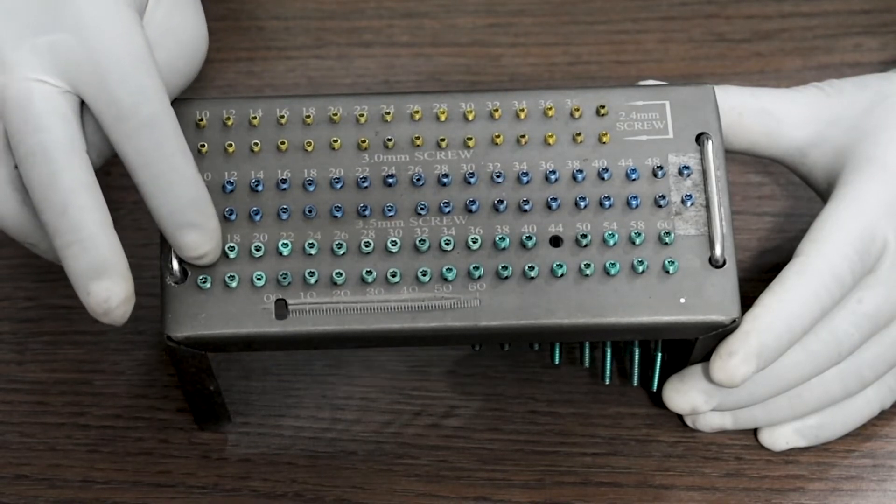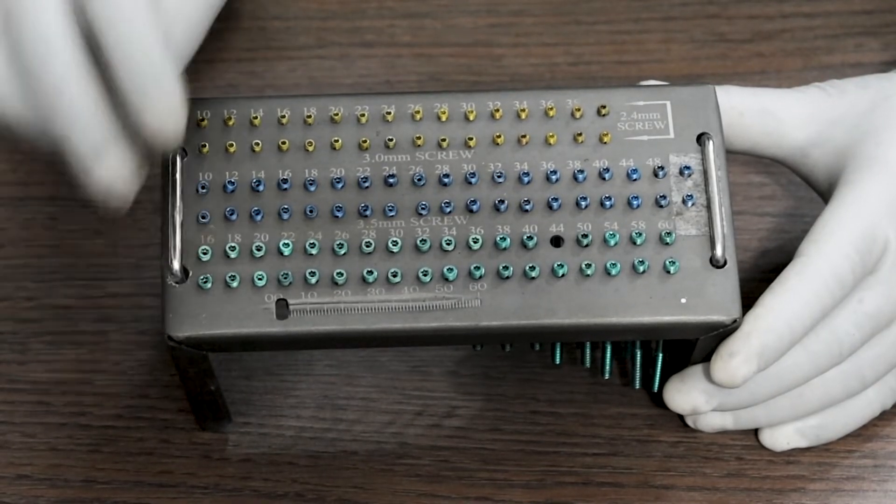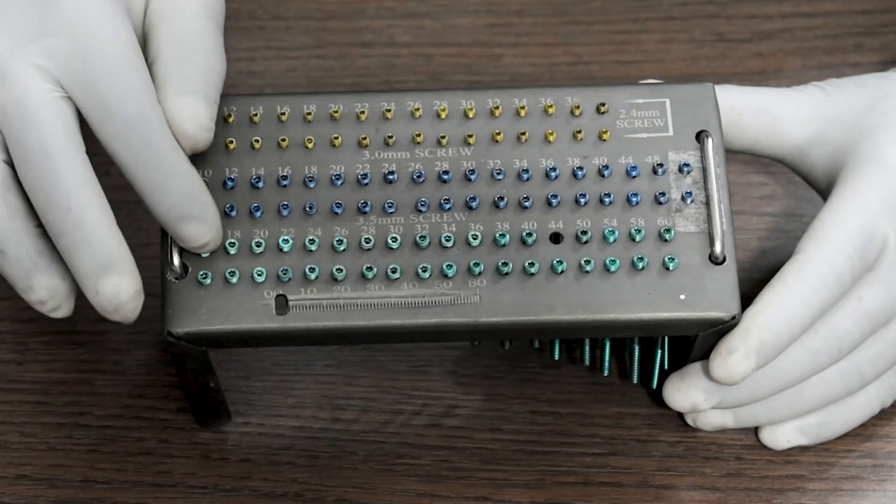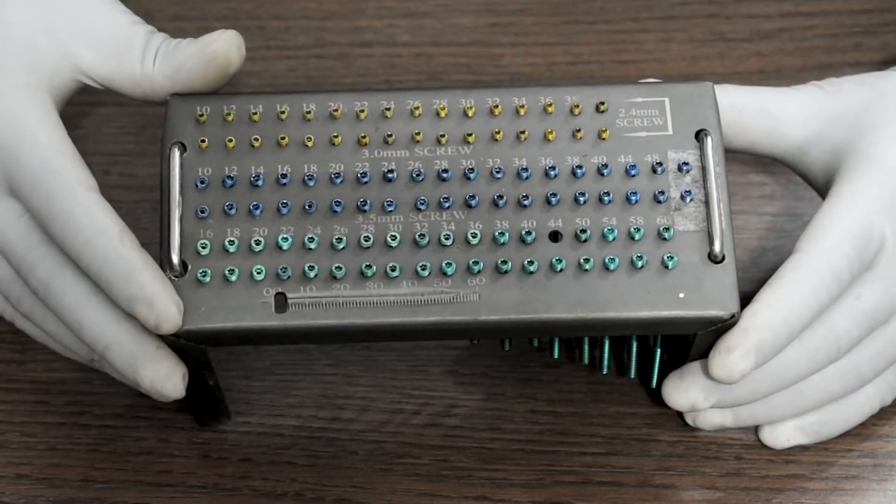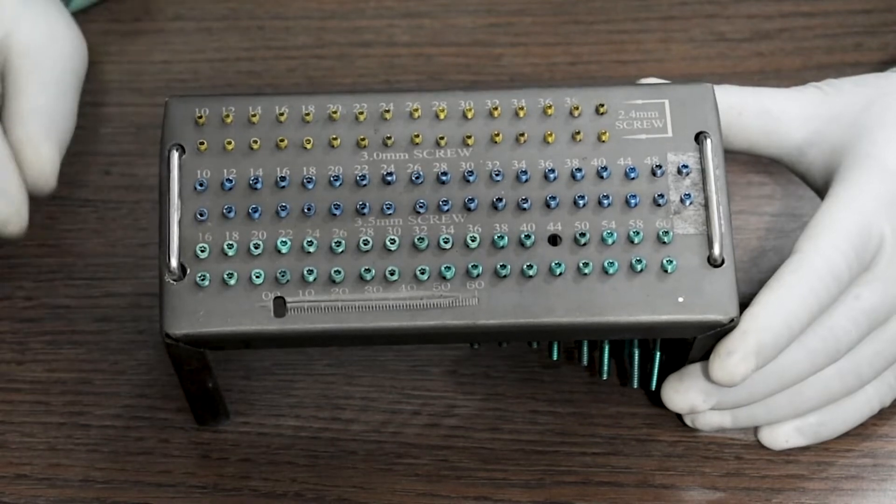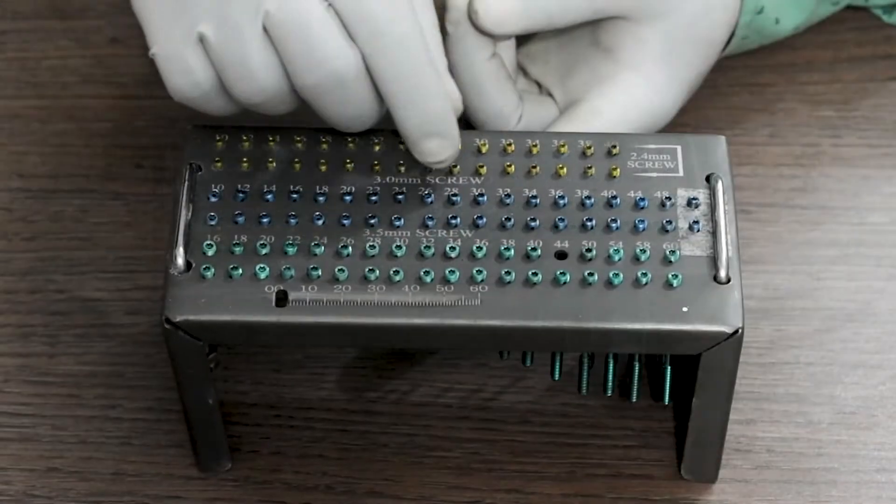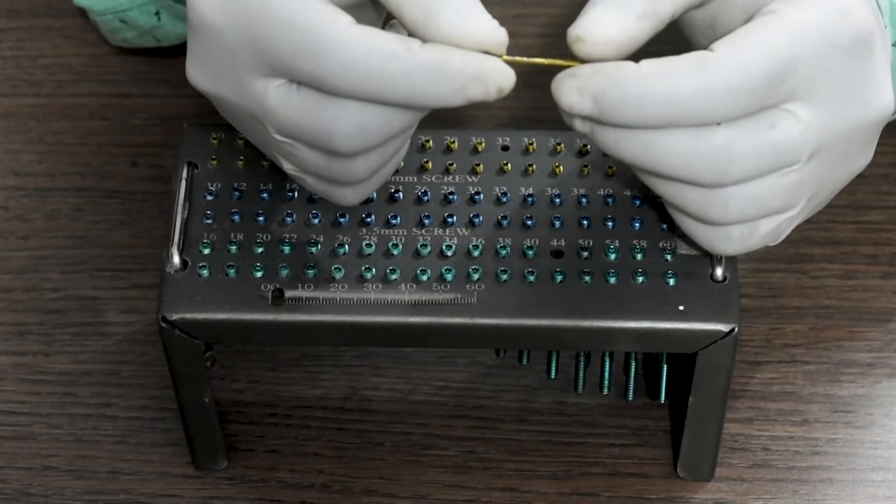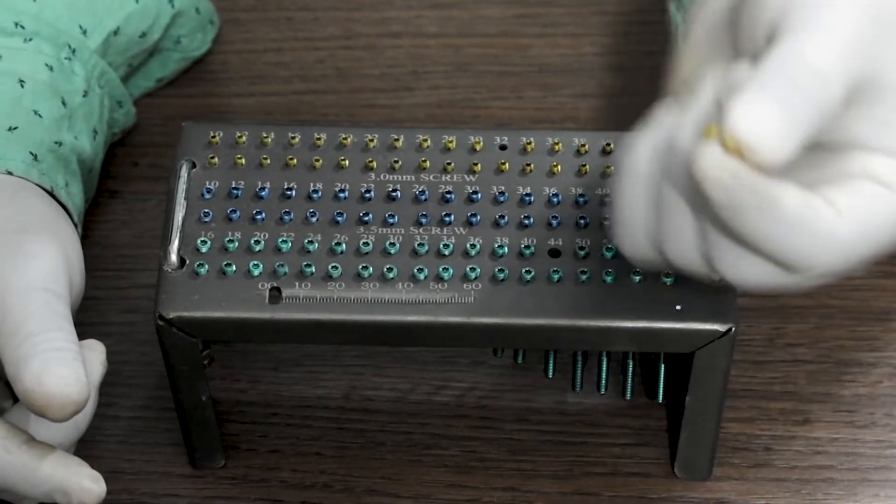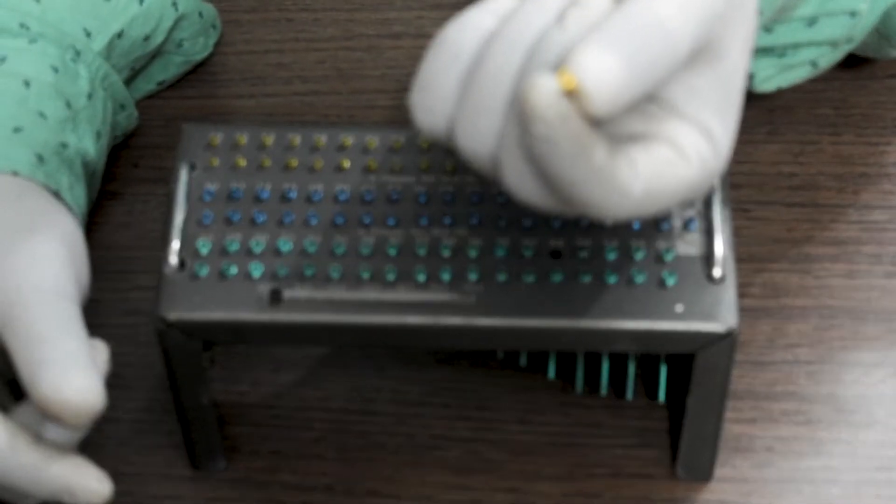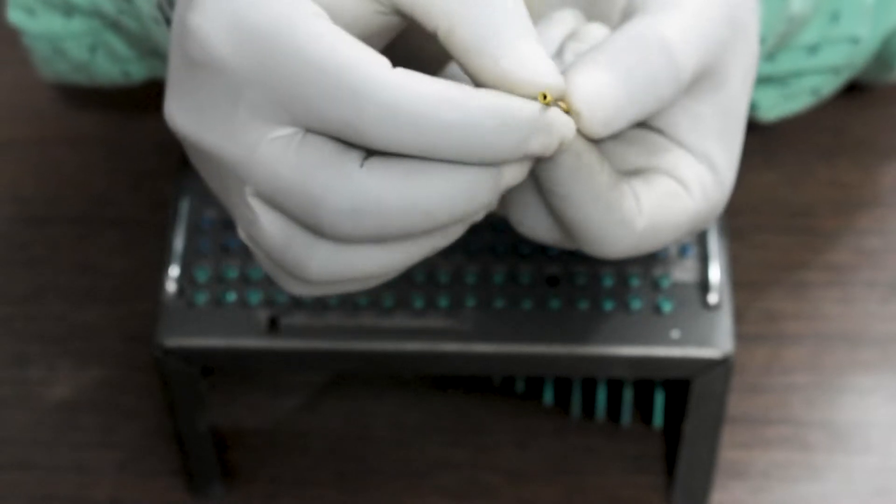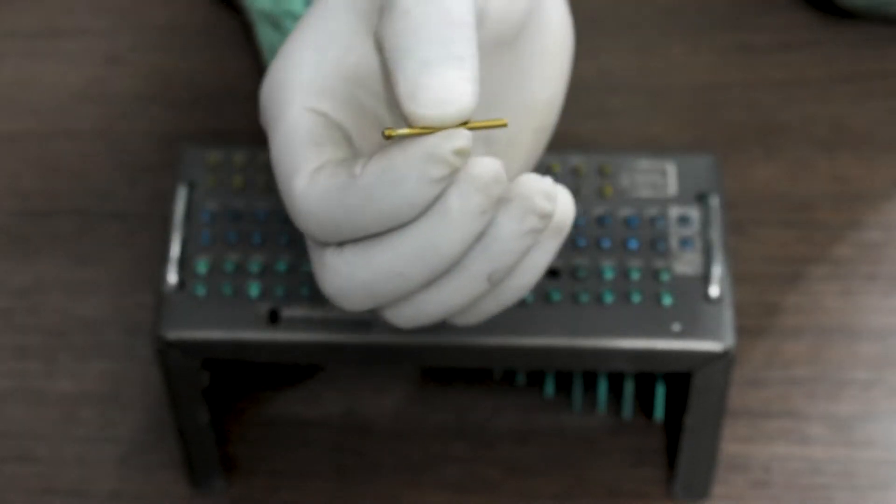And for 3.5mm, 16mm to 60mm, two pieces each. This is the 2.4mm Special Herbert Screw. It is cannulated, also called a headless screw.